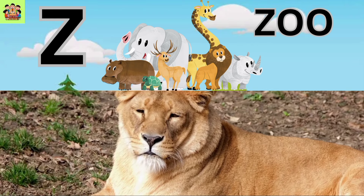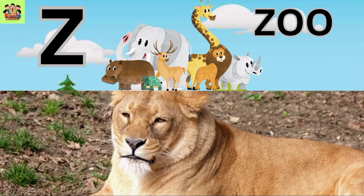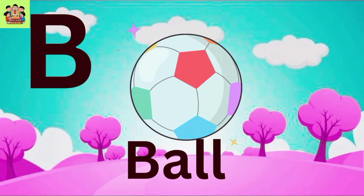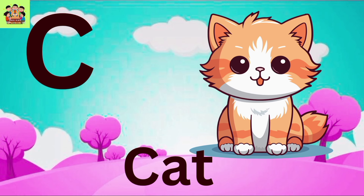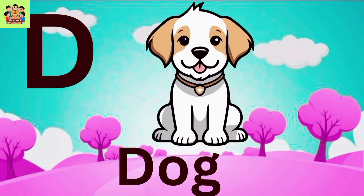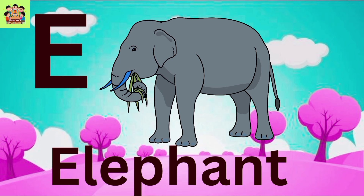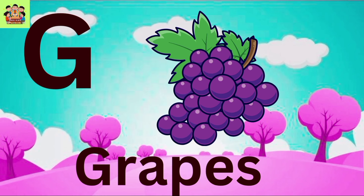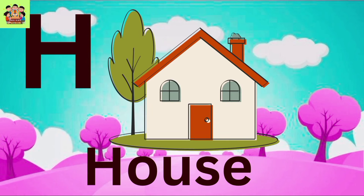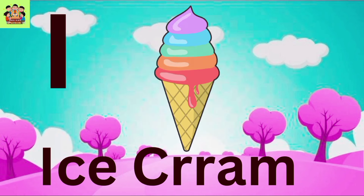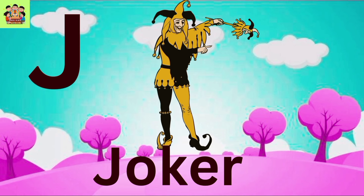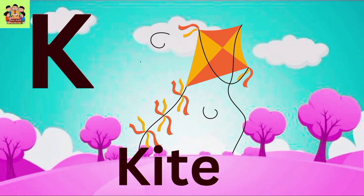Z for Park. Z for Zoo. A for Ambulance. B for Blue. B for Ball. C for Cat. D for Dog. E for Elephant. F for Fish. G for Grabs. H for House.